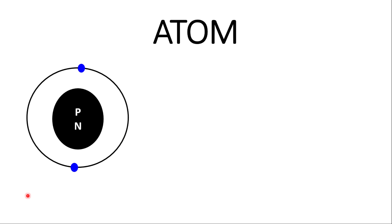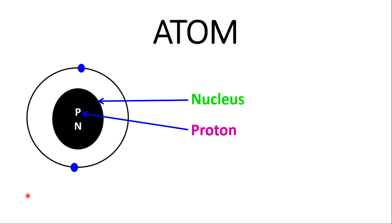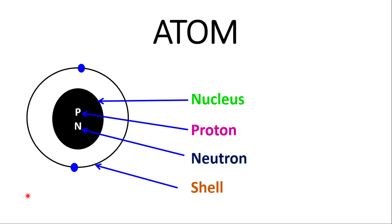Atoms will be your first on the list, and atoms contain some very important structures that we need to know. In the central part of the atom we'll find the nucleus. Within the nucleus we'll find protons. We also find neutrons. And surrounding the nucleus you'll find the shell, and on the shells you will find electrons.